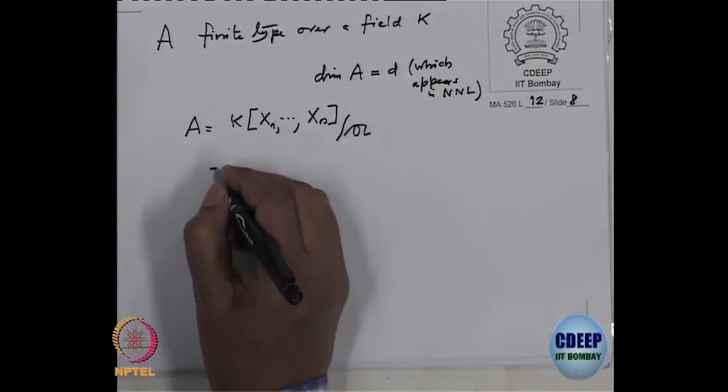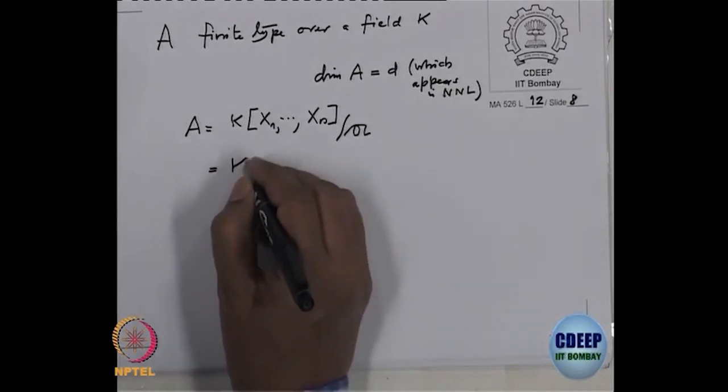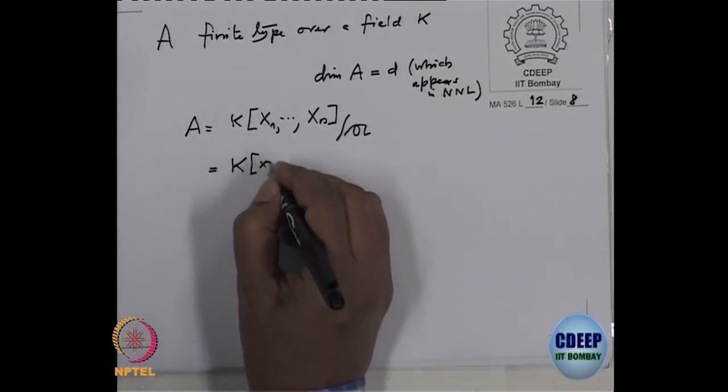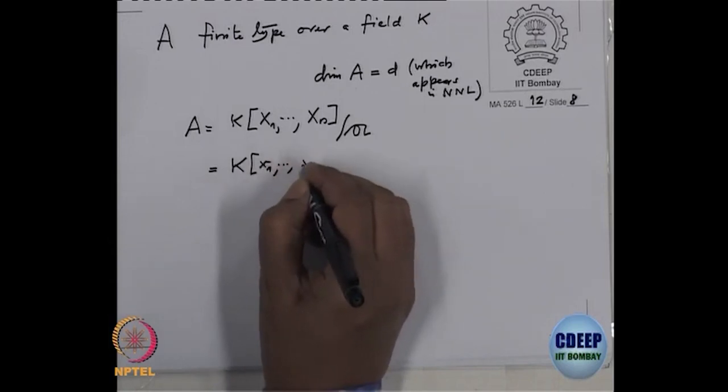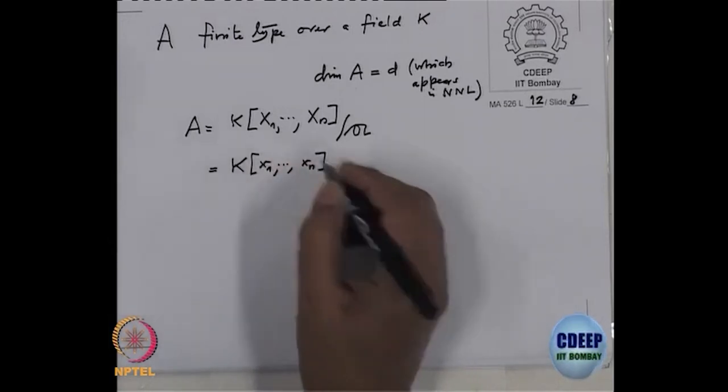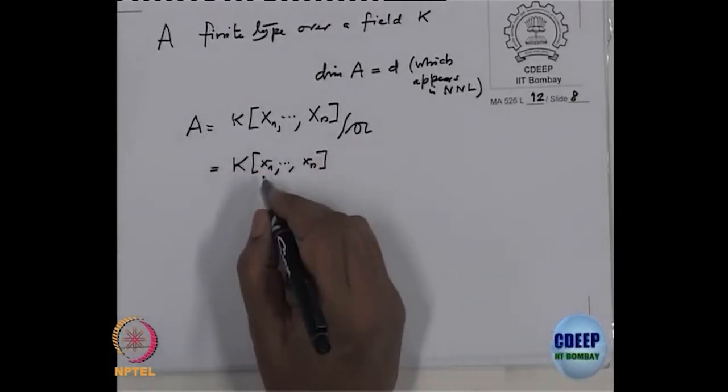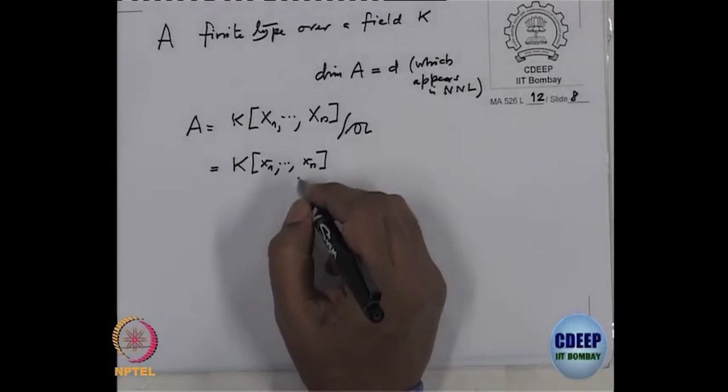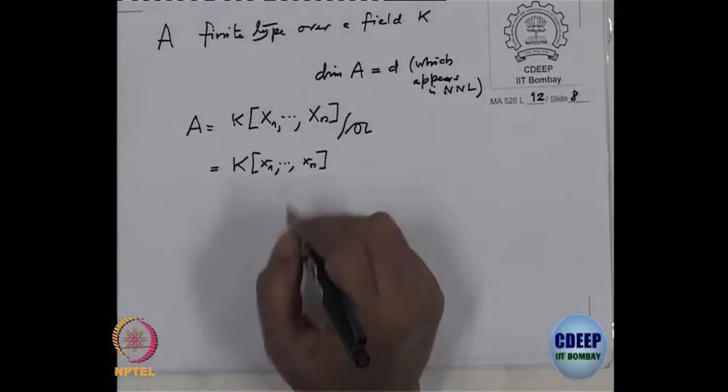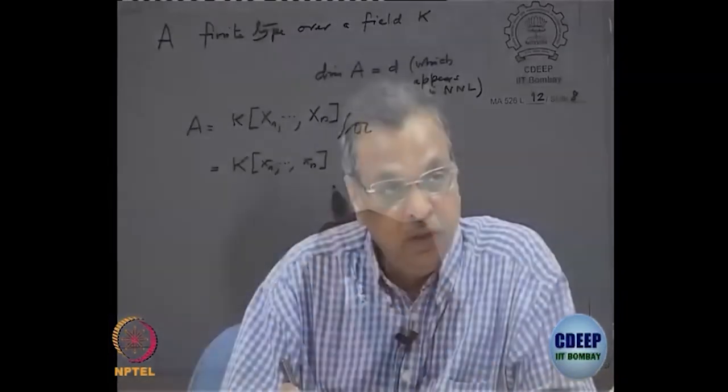So what I wanted was, suppose these small x_i are the images of capital X_i in this residual class ring. Then from such A, I define, I want to define a polynomial function. I want to define some numerical function and check that numerical function is a polynomial function. And that D, I wanted to check this D.